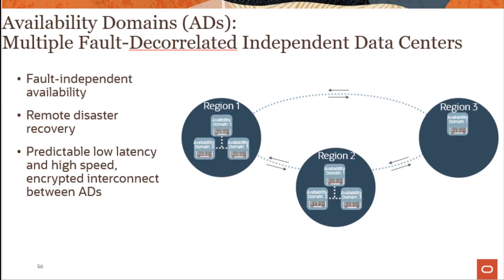In the previous slide we looked at the region's distribution across the globe. A region is a top-level component of the infrastructure. Each region is a separate geographical area with multiple fault-isolated locations called availability domains or ADs. An availability domain is the subcomponent of a region and is designed to be independent and highly reliable. Each availability domain is built with fully independent infrastructure, buildings,